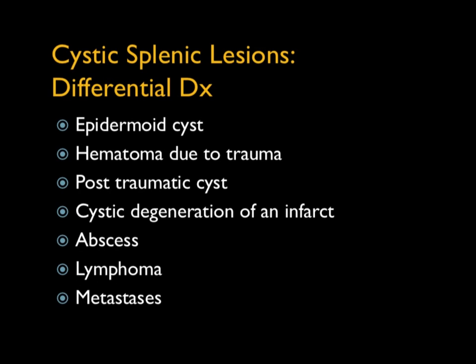When we talk about cystic splenic lesions, beyond simple cysts and epidermoid cysts, you can see sequela of a prior hematoma due to trauma, or cystic change from an infarct. Abscesses can be cystic but will have irregular walls, thickened nodularity, or perfusion changes near them. Lymphoma and mets can be cystic, but again it's not going to be that pure cyst appearance.